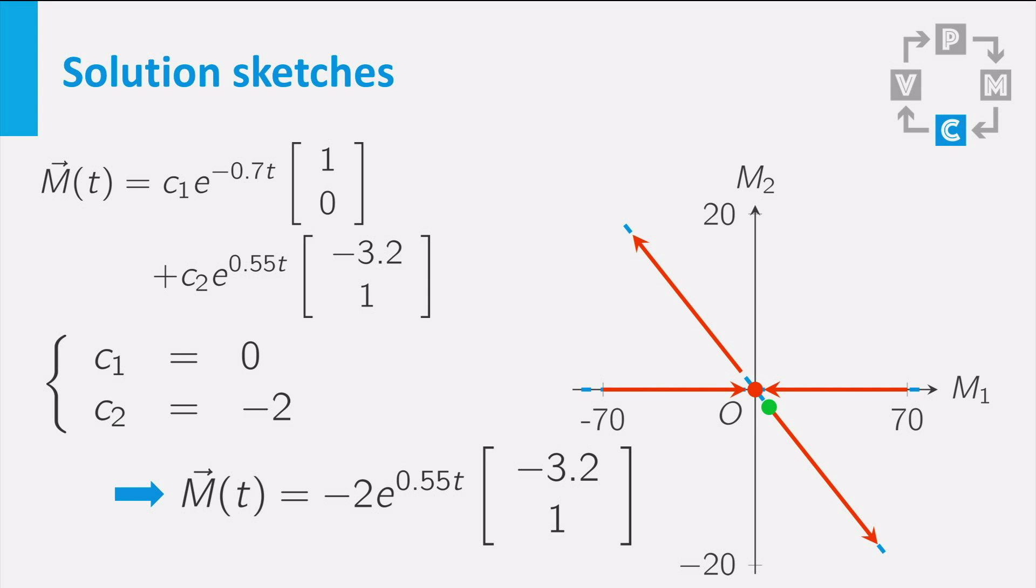Now let us try something harder. Take c1 at 70 and c2 at 2. If time t now increases, one exponential becomes smaller and smaller, so this part of the solution of m tends to the origin.